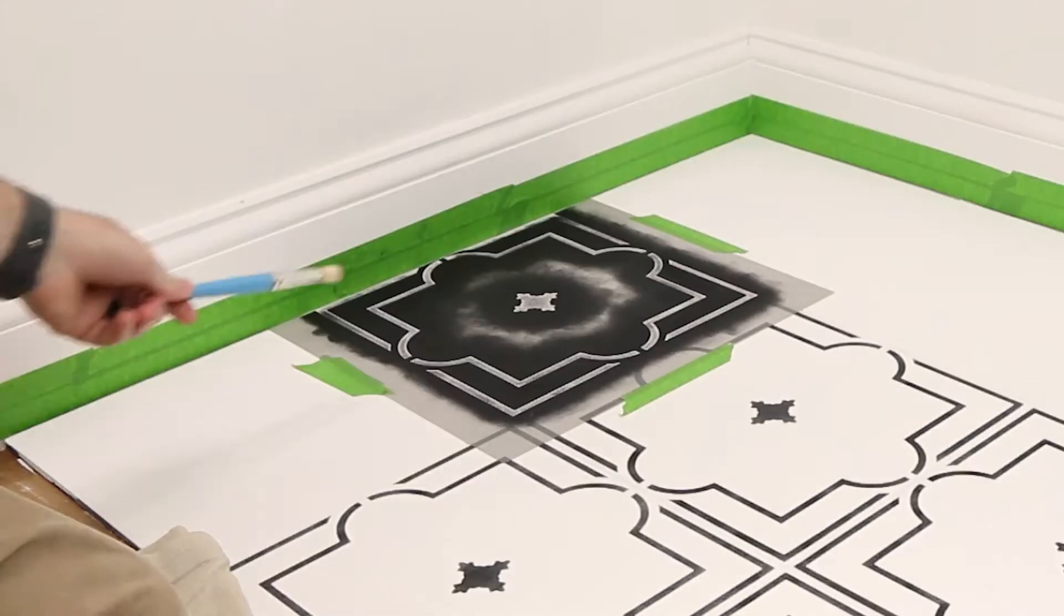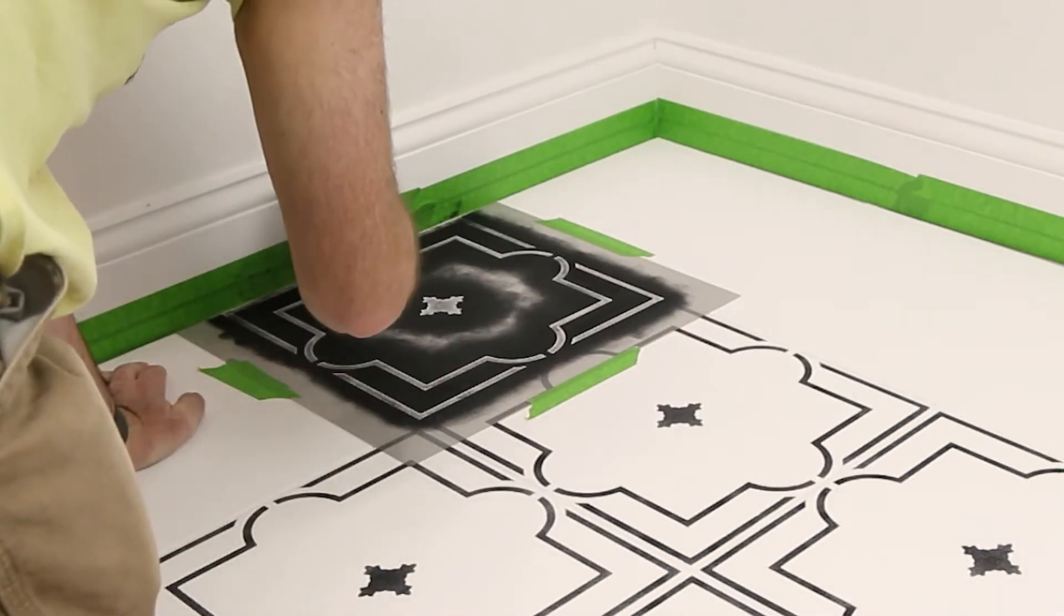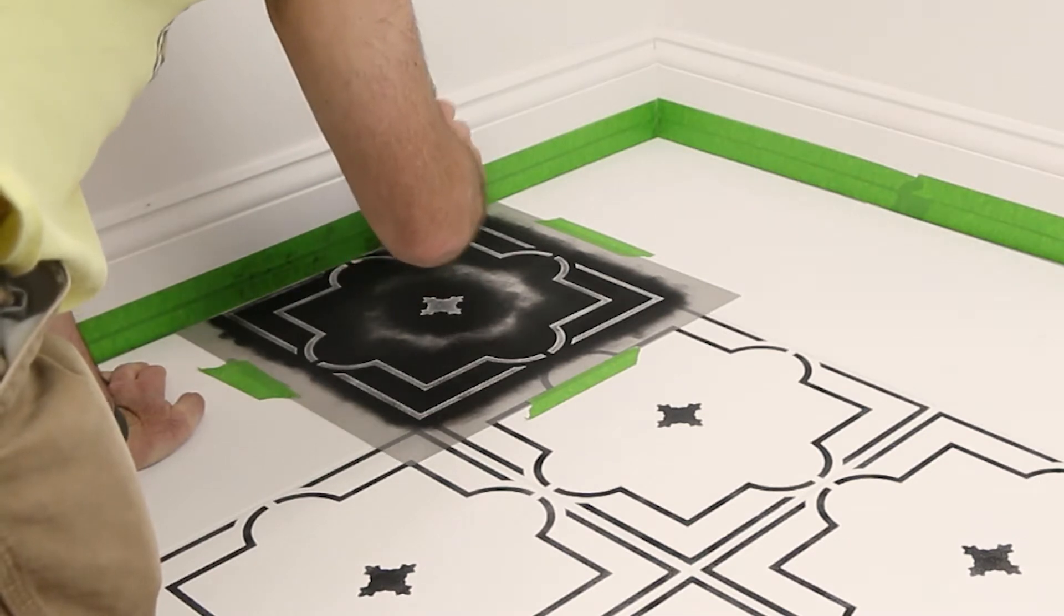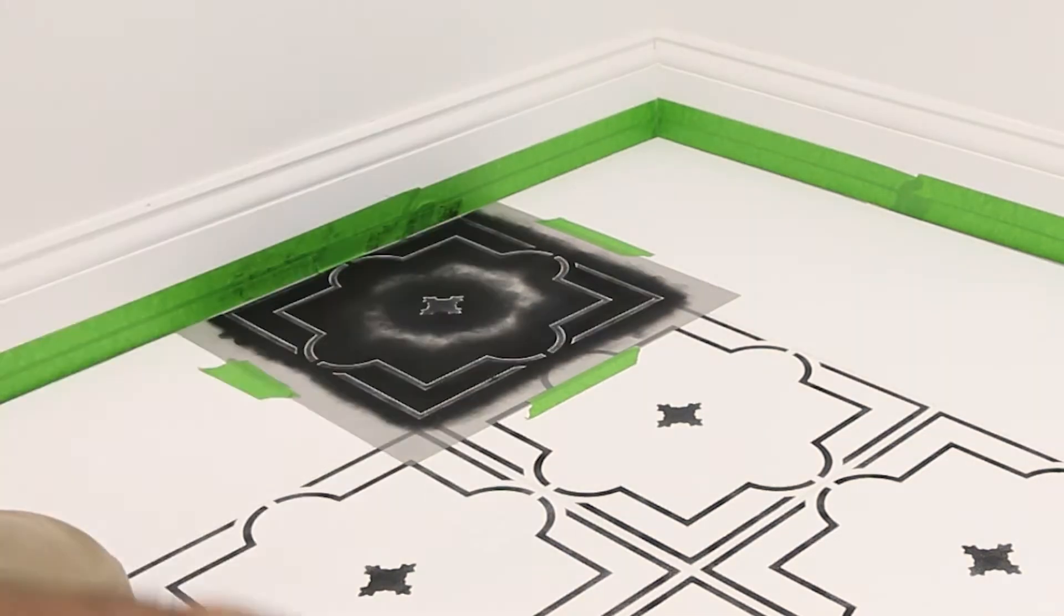For the edge where the roller cannot reach, use a stencil brush to lightly fill in the pattern. As with the roller, remove excess paint from the brush by swirling it on the paper towel stack.